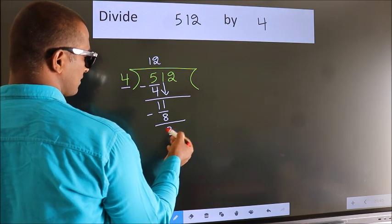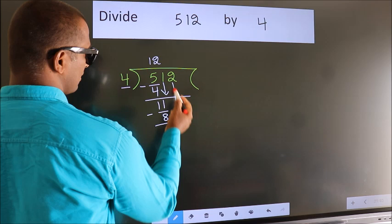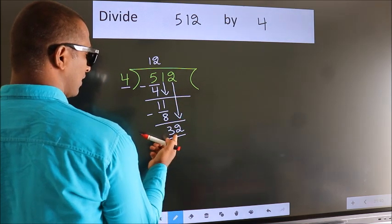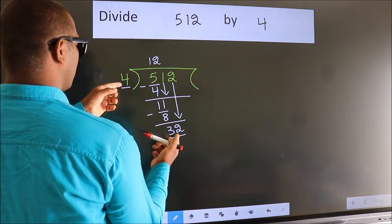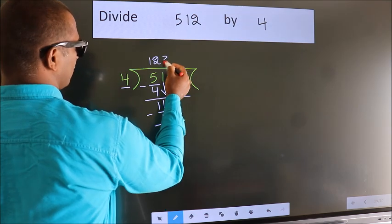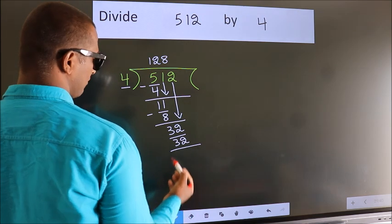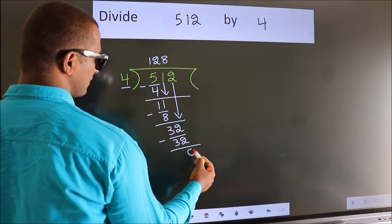After this, bring down the beside number. So, 2 down. So, 32. When do we get 32? In the 4 table, 4 8s, 32. Now, we subtract. We get 0.